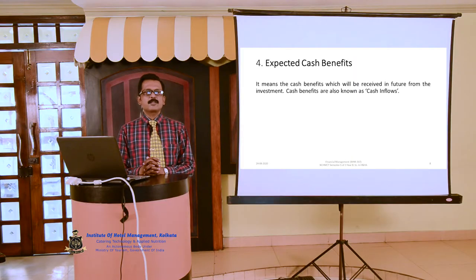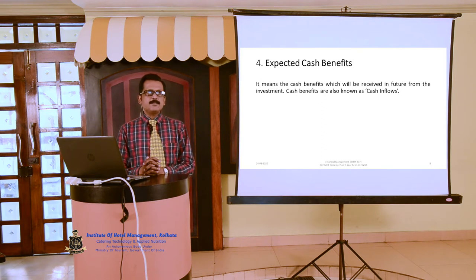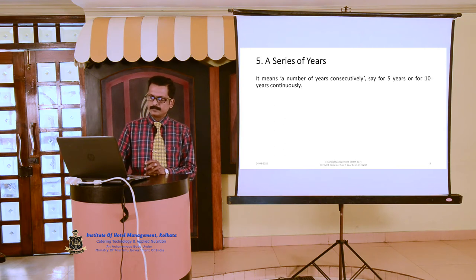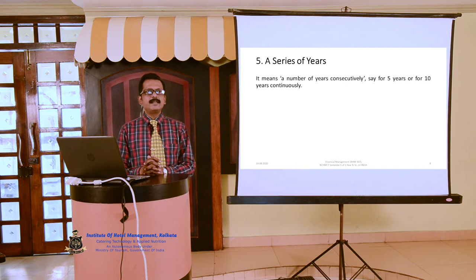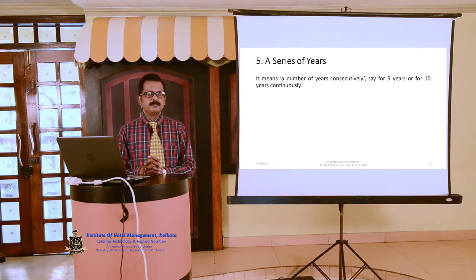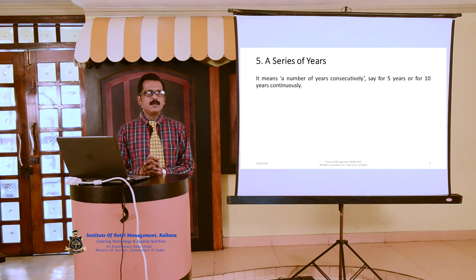Point number four: expected cash benefits — it means the cash benefits or returns which will be received in future from the investment made. Cash benefits should be as maximum as possible. Cash benefits are also known as cash inflows. Point five: a series of years — a series of years means a number of years consecutively, one after another without interruption. Say, for five years continuously, seven years continuously, or ten years continuously — this is called a series of years.